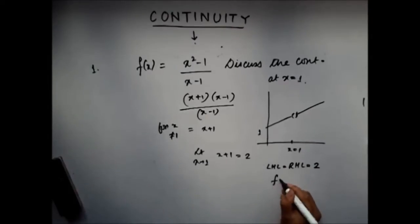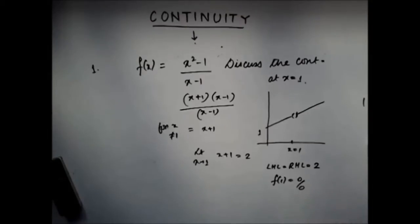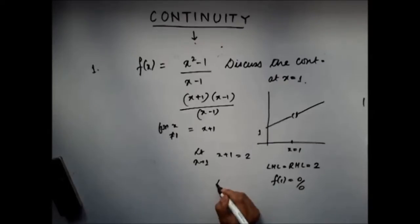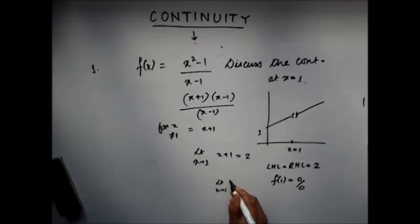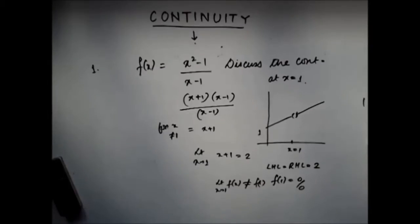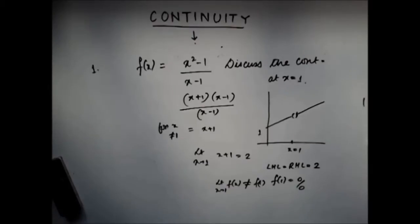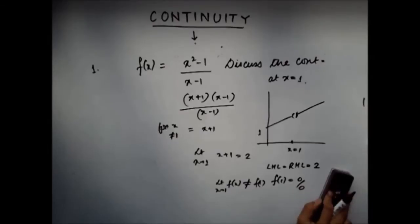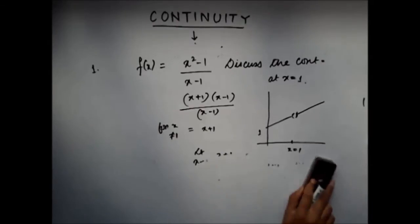But since f(1) is of the form 0/0, f(1) is not defined. That means the limit exists but is not equal to f(1), so the function is not continuous at this point. Now let's take another example.